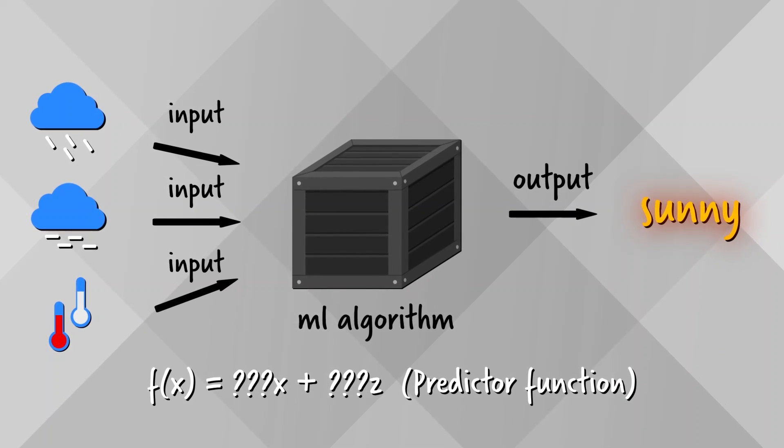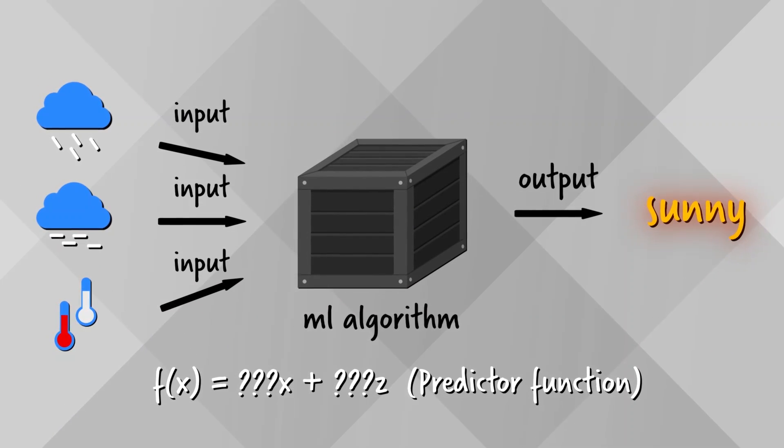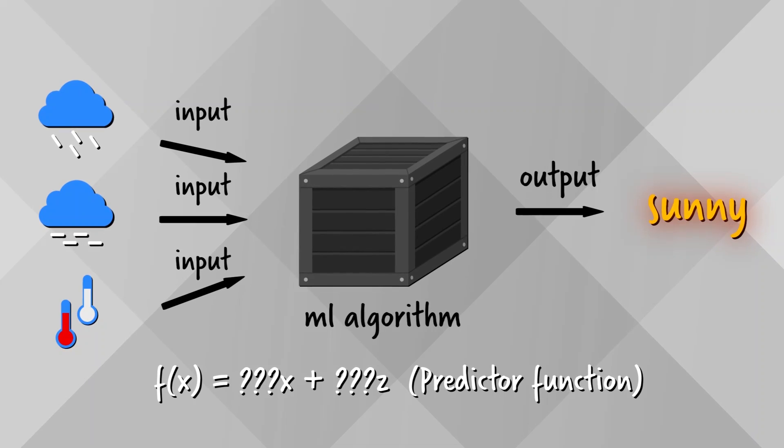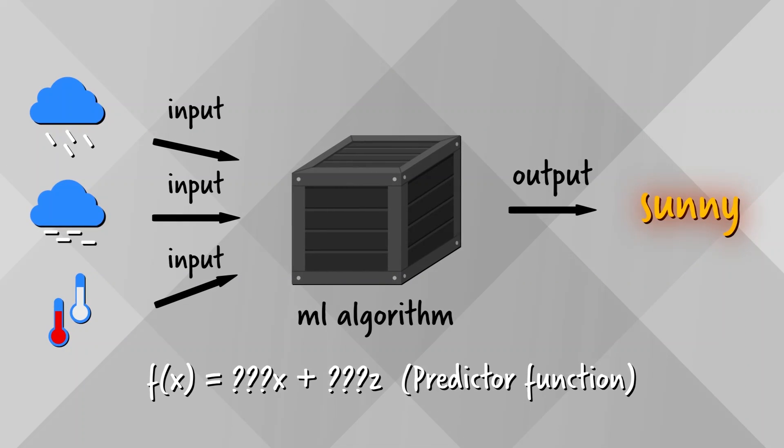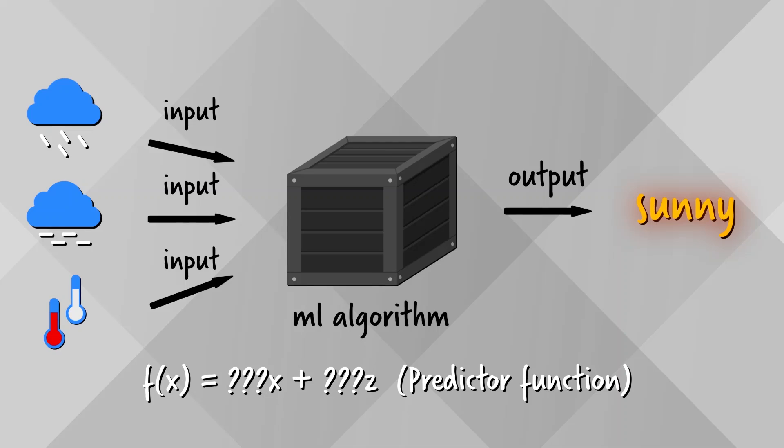We want the predictor to approximately work even for examples that it hasn't yet seen before in the training data. That is, we want it to be as generalized as possible.